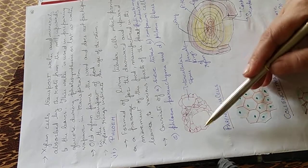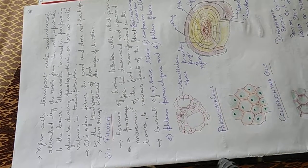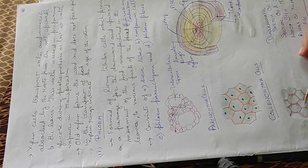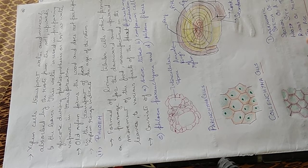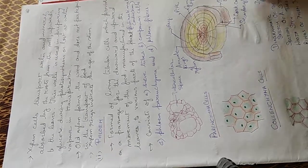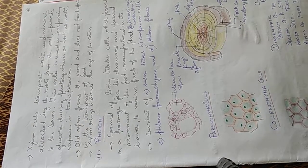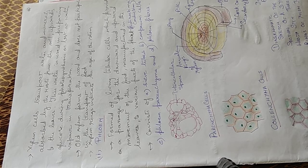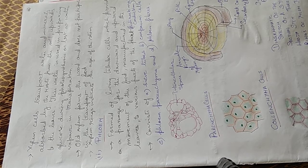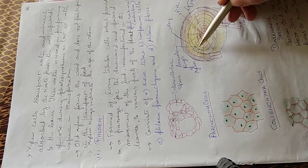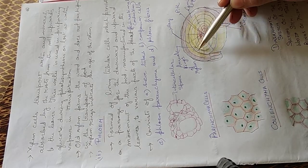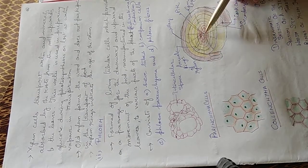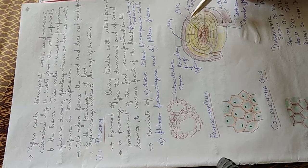These are the parenchyma cells with intercellular spaces. Large intercellular spaces are there. This is the collenchyma cells. These are the sclerenchyma cells with thick walls. And this is the xylem, old xylem. It's a diagrammatic representation of the cross-section of three-year-old wood stem. Three concentric rings of xylem indicating its age. These are the annual rings which we find, which indicates the age. These are the rays. This is the pith portion. And this is the cambium layer.